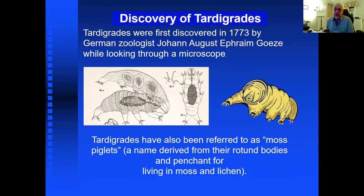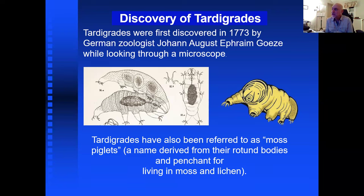How were tardigrades discovered? In 1773, a German zoologist, Johann August Ephraim Goeze, was looking through a microscope and spotted them. Back then there was no photography, but we have beautiful, very detailed and accurate drawings that survived from the early days of science. Tardigrades have also been referred to as 'moss piglets' because of their little round bodies — they look a bit like a pig with a little snout — and they live in moss and lichen.